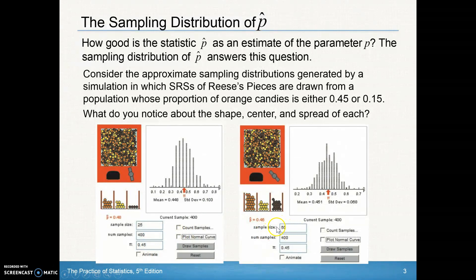Let's do it again. Here we took a sample size of 50 instead of 25 — a larger sample size — still taking the same 400 samples with a known population parameter of 0.45. The computer generation gave us a p-hat of 0.46, so a little bit closer. Analyzing these shapes, both look approximately normal and approximately symmetric, with centers pretty close to where they should be.